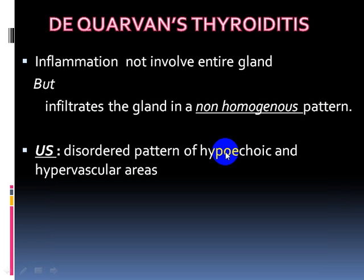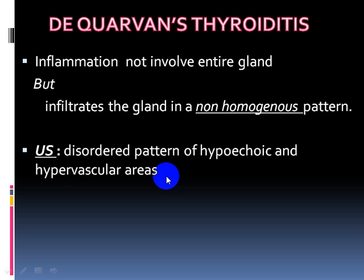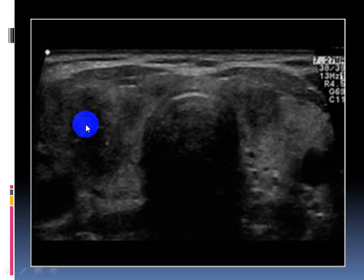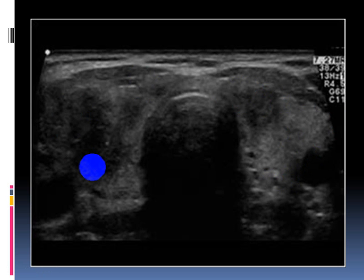The third diffuse thyroid disease is De Quervain's thyroiditis. This is an inflammation that does not involve the entire gland but involves regions or parts of the gland, infiltrating it in a non-homogeneous pattern. Ultrasound gives a disordered pattern of hypoechoic and hypervascular areas. This diffuse disease does not involve the whole gland — it involves parts of the thyroid. As seen in the example, we can see normal parenchyma alongside heterogeneous hypoechoic areas. Of course, other lab and mechanical investigations also assist in diagnosis.